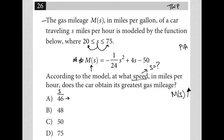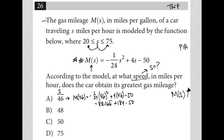Let's try choice A. If I plug in 46, I get M of 46 equals negative 1/24 times 46 squared plus 4 times 46 minus 50. Going straight to the calculator: 46 squared divided by negative 24 gives negative 88.16 repeating, then plus 184 and minus 50. So I'm getting 45.8. That is the value at S equals 46.